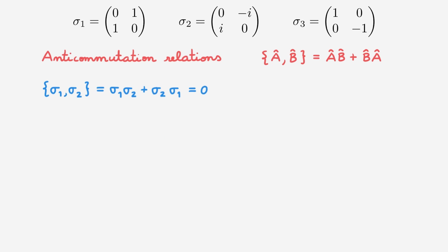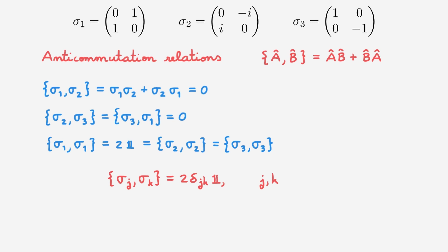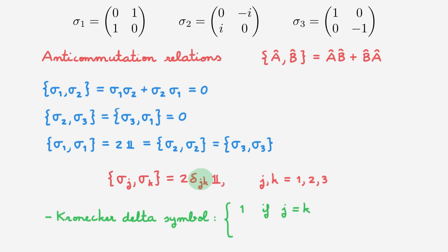We could repeat this for all other pairs. The anticommutator between sigma 2 and sigma 3, and between sigma 3 and sigma 1, both vanish. By contrast, the anticommutator of sigma 1 with itself equals two times the identity matrix, and so do the anticommutators of sigma 2 with itself and sigma 3 with itself. We can summarize these as the anticommutator of sigma j and sigma k being equal to 2·delta_jk times the identity matrix, where j and k run from 1 to 3, and delta_jk is the Kronecker delta, equal to 1 when j equals k and 0 otherwise.